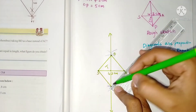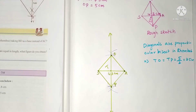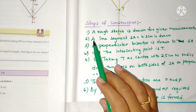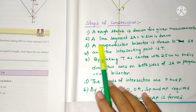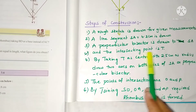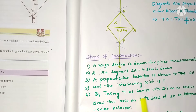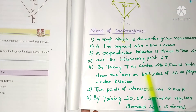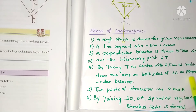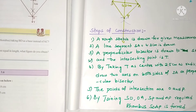By joining OS, OA, SP, and AP, the required rhombus SOAP is formed. Steps of construction: a rough sketch is drawn; line segment SA is drawn; a perpendicular bisector is drawn to SA and the intersecting point is T. Taking T as center with 2.5 centimeters radius, two arcs are drawn on both sides of SA on the perpendicular bisector. The points of intersection are O and P. By joining SO, OA, SP, and AP, the required rhombus SOAP is formed.